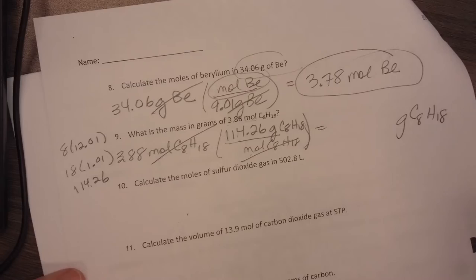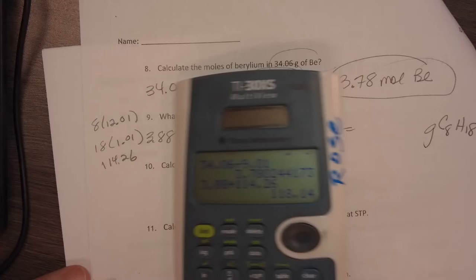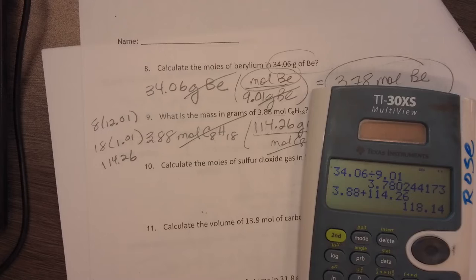The mole of octane divides out, and I get grams of octane as my unit. You have to show your units on the final, or else you won't get credit. 3.88 times 114.26. I get 118.14. Again, I only want 3 significant figures.